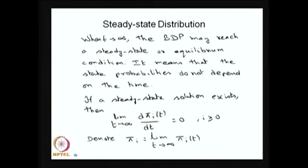The meaning of a steady state distribution is that the state probabilities do not depend on time. As t tends to infinity, whenever we say the birth-death process reaches a steady state or equilibrium, that state probability does not depend on time t. That means if a steady state solution exists, since the state probabilities do not depend on time as t tends to infinity.